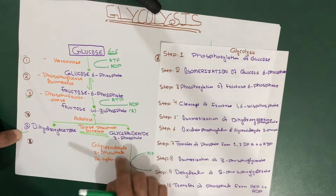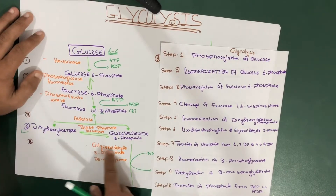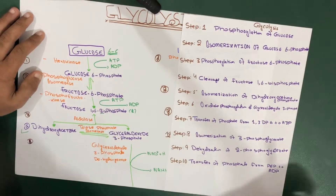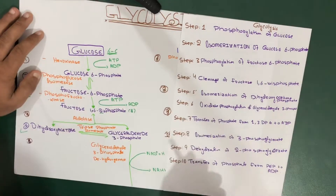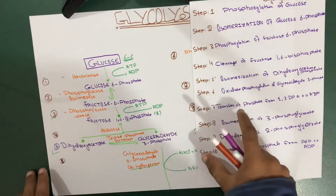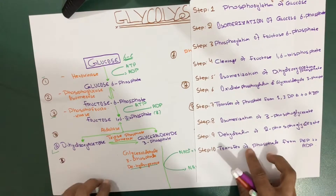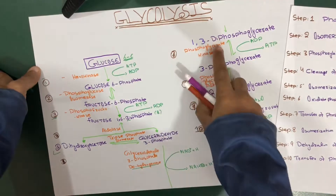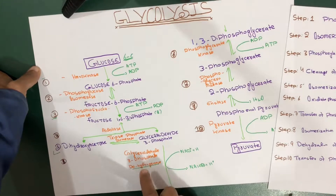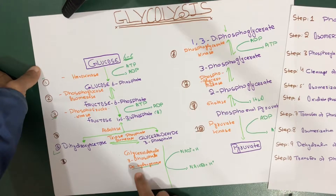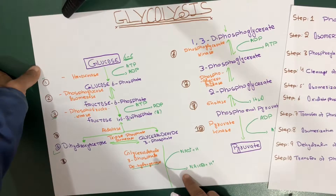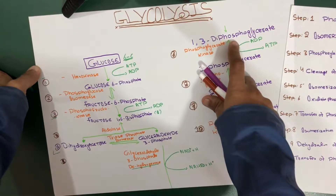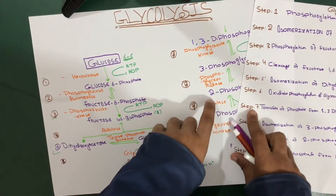From here — steps six through ten — we enter the payoff phase, where we gain energy. Step six is the oxidative phosphorylation of glyceraldehyde-3-phosphate. It is converted into 1,3-diphosphoglycerate by the enzyme glyceraldehyde-3-phosphate dehydrogenase. Whenever you hear 'dehydrogenase,' it means NADH is involved — and indeed, NADH is formed in this reaction.